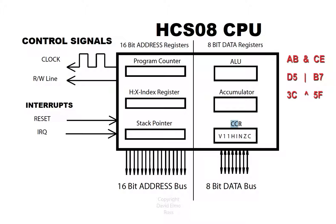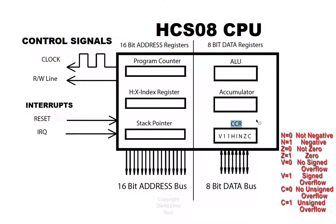You also find that this has a condition code register, sometimes called a status register, and there are four bits used for things like if this number is greater than, less than, or less than or equal to another number. Those decisions are made at the hardware level based on N, which is the most significant bit of your result, and Z, which is a zero bit indicating if the number is zero. You also have C for unsigned overflow, which is a carry or borrow, and signed overflow — if you add two positives and get a negative, or two negatives and get a positive, that is a signed overflow.